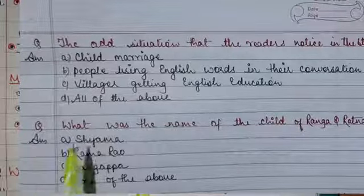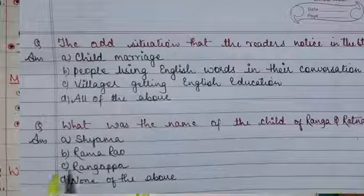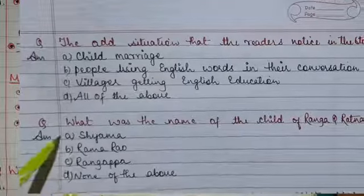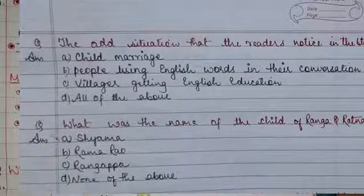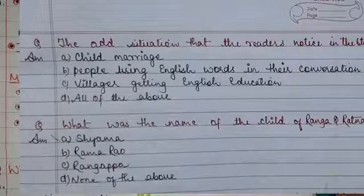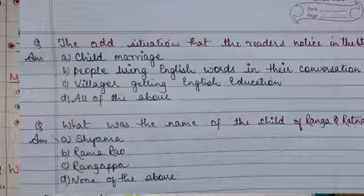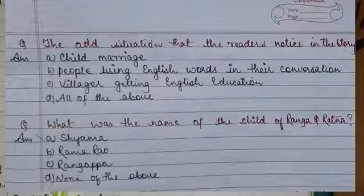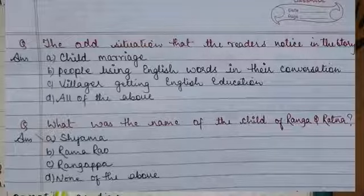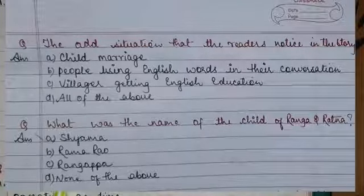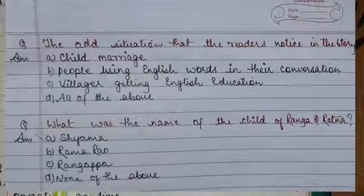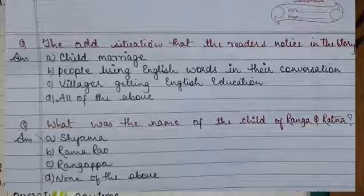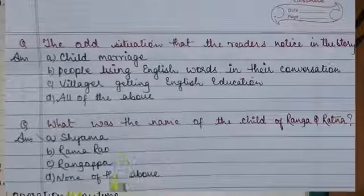What was the name of the child of Ranga and Ratna? Option A: Shyama, Option B: Ramarao, Option C: Rangappa, Option D: None of the above. The answer is Shyama — the writer's name — and the child's name is also Shyama. Ranga had some influence of western culture where people name their children after someone they love. Ranga loved Shyama because Shyama played a crucial role in making the match of Ranga and Ratna.